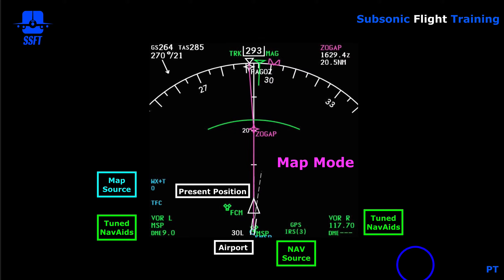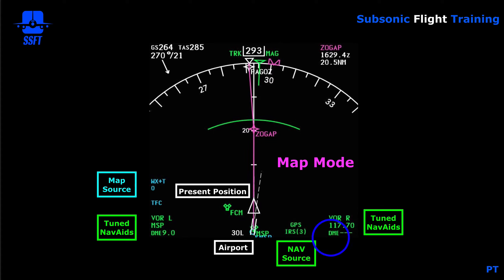The present position is the white triangle; we are at the tip of the triangle. The NAV source in this case is GPS and IRS-3, meaning all three IRUs are being used for the triple mix position, and the IRS inertial position is being updated by GPS. Since both GPS receivers are working and receiving position information, that's the information used to update the IRU inertial position.